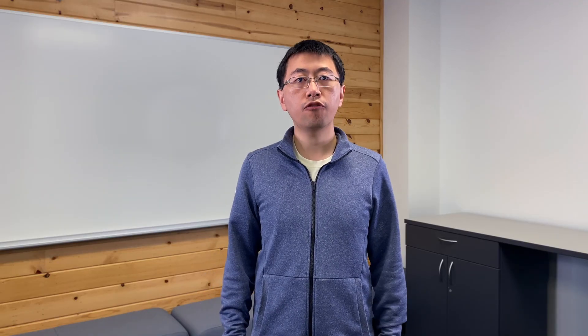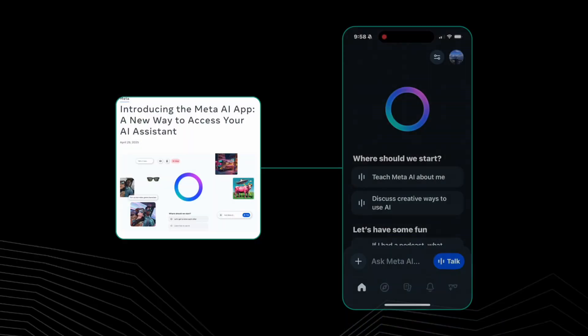Hello everyone, I'm Zhenyu Huang, a research scientist from Meta. Today I will present Inference Deployments and Communication Implications, together with my colleagues Xiaodong Wang and Chen Zhao from Meta. In April, we launched the Meta AI app powered by LLAMA 4. I will walk you through an example to illustrate the concept of our LLAMA inference system.